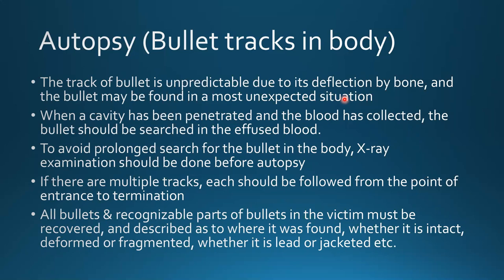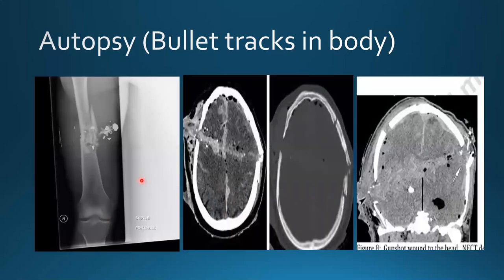All bullets and recognizable parts of bullets must be recovered and described — noting where found, whether intact, deformed, or fragmented, and whether lead or jacketed. Bullet tracks in the brain may show crush cavity, wound cavity, and stretch cavity. If almost all energy is lost penetrating scalp, bone, and dura, the bullet may pass through the brain without producing cavitation. Cavitation is seen with high velocity bullets; with low velocity, cavitation is minimal. Different X-rays and CT scans can be used to visualize the bullet tract, entry, and exit wounds.